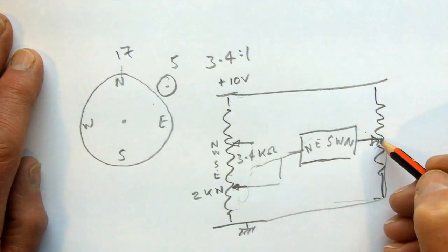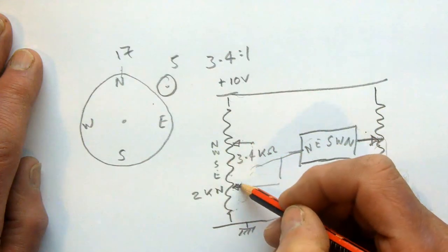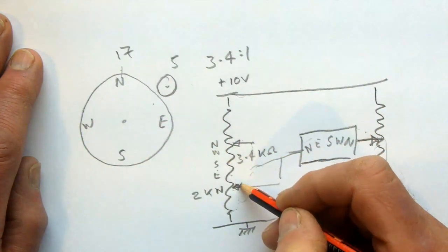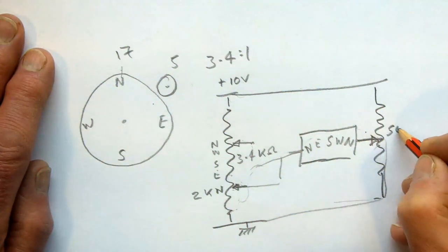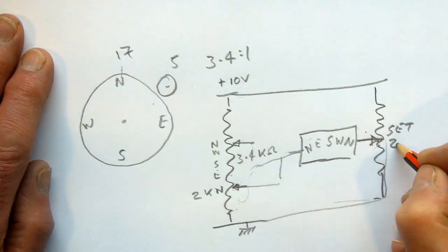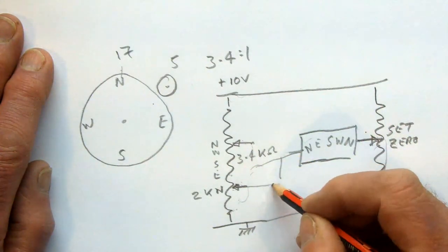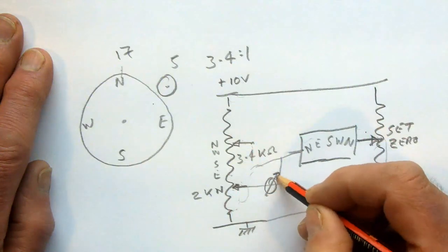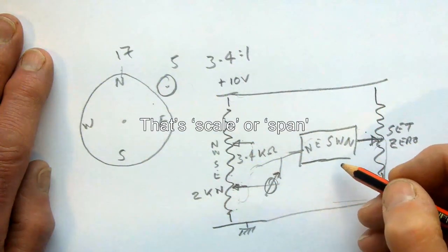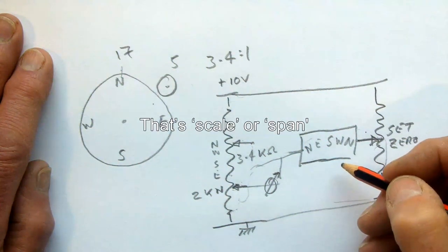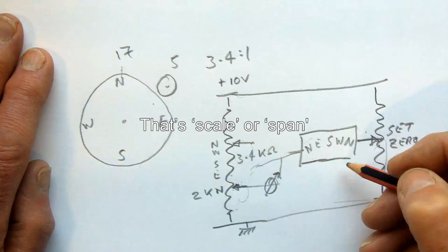So in fact what I will have is this potentiometer that gives me my direction, I'll have this potentiometer that I'll use to set zero, and then I'll have another potentiometer in there that will actually set the scale. And I'll show you in a little demonstration exactly how that setup works.